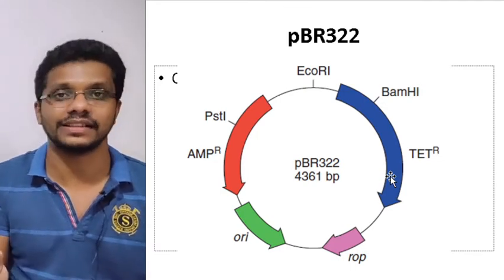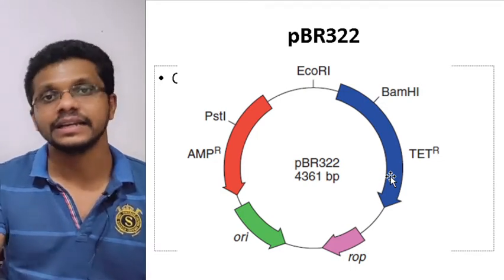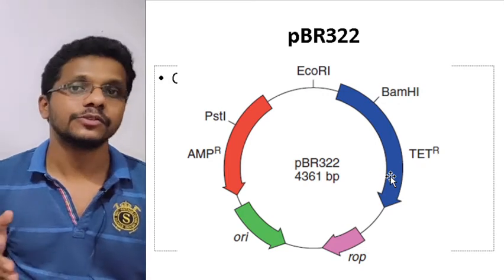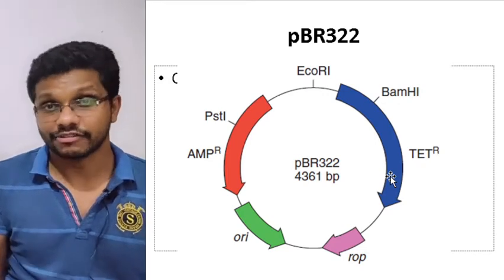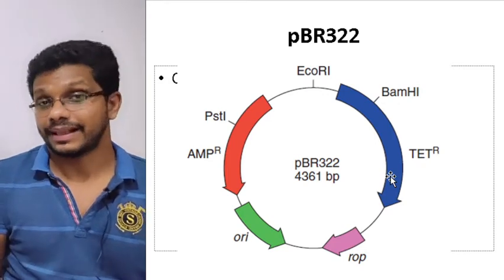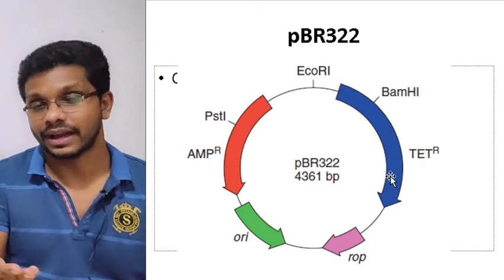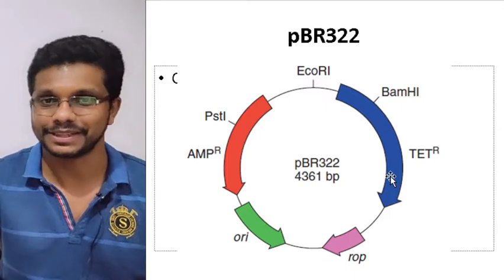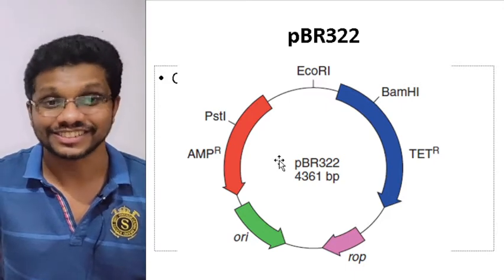We can do the experiment by adding this antibiotic into the medium. If they are able to survive, they have the plasmid. If they don't have the plasmid, they will die. That's the simple method of screening.